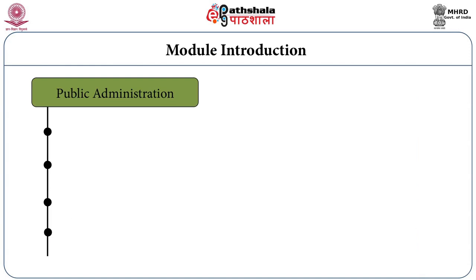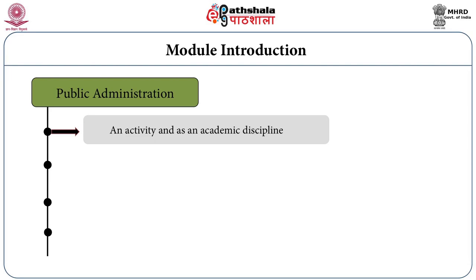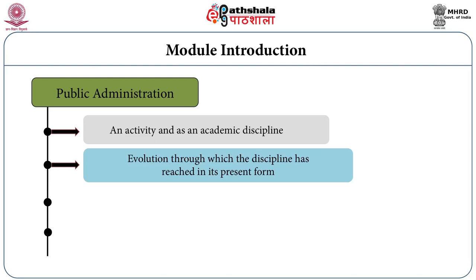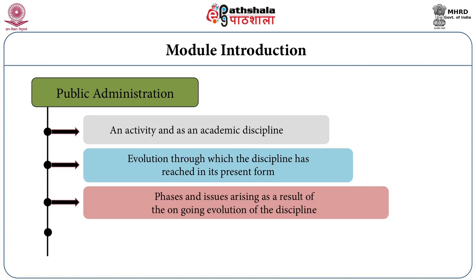The module is divided into the following sections. The first part describes the evolution of public administration as an activity and also as an academic discipline. The second part discusses the various stages of evolution through which the discipline has reached its present status. In the third part, we will discuss the phases and the issues arising out of the ongoing evolution, and also the future direction of public administration.